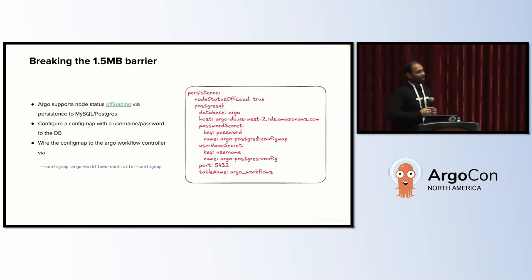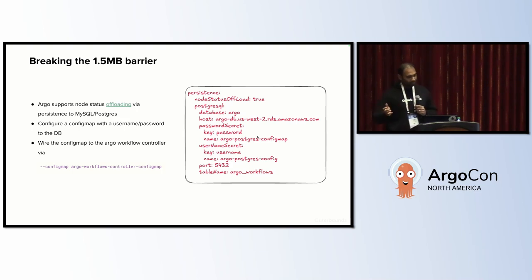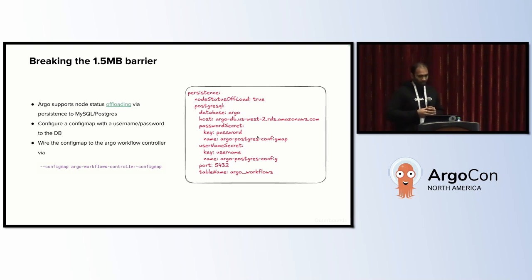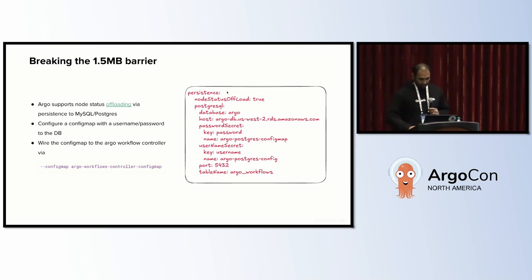How do you break that barrier? Argo supports a feature called offloading, where node statuses do not need to be stored on etcd — they can be offloaded to a different persistence layer. It supports both MySQL and Postgres. When you start up your Argo workflows controller, you can pass through the persistence object, set node status offload to true, and provide details about the database you want to offload to. In our case, we chose Postgres.